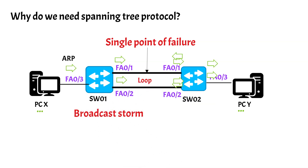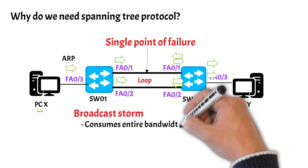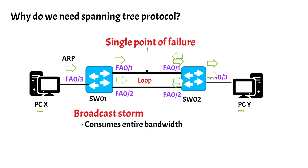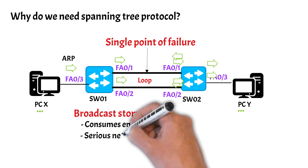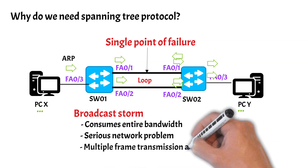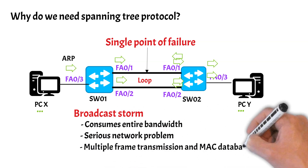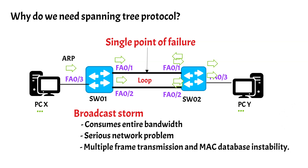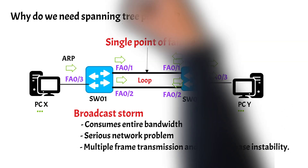A broadcast storm consumes entire bandwidth and denies bandwidth for normal network traffic. It is a serious network problem and can shut down an entire network in seconds. Loops can also cause multiple frame transmission and MAC database instability. All of these problems can be solved with the spanning tree protocol.